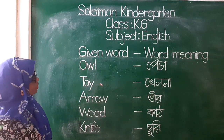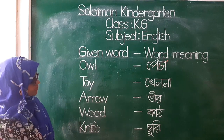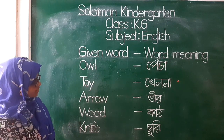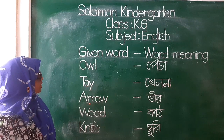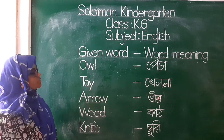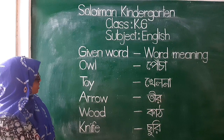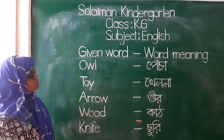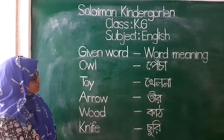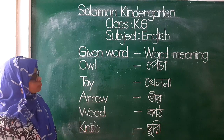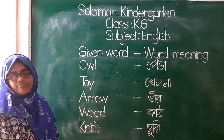Owl — Pecha. Toy — Hella. Arrow — Tear. Wood — Cut. Knife — Churi.